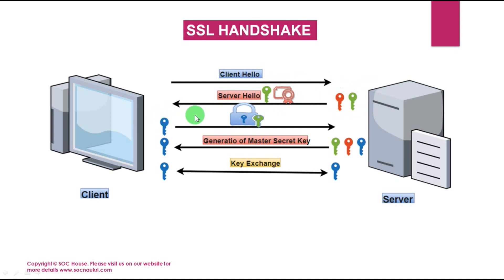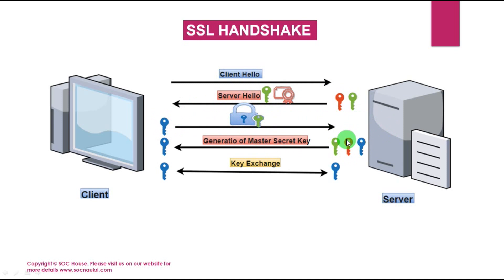The client authenticates the server certificate — checking the name, date, issue time, and other information — then creates a premaster secret key for the session, encrypts it with the server's public key, and sends the encrypted premaster secret key to the server. Since only the holder of the private key can decrypt the message, the server uses its private key to decrypt the premaster secret. Both server and client then perform steps to generate the master secret key using the agreed cipher or algorithms.